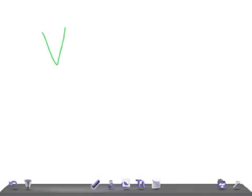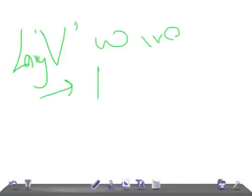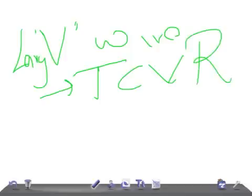Now the large V wave. Where do you see large V waves? It is nothing but tricuspid regurgitation. V wave is nothing but the closing of the tricuspid valve, so a large V wave is seen when there is tricuspid regurgitation — the pressure increases due to the regurgitation. The V wave is a positive wave, so you need increased pressure to see a large wave.